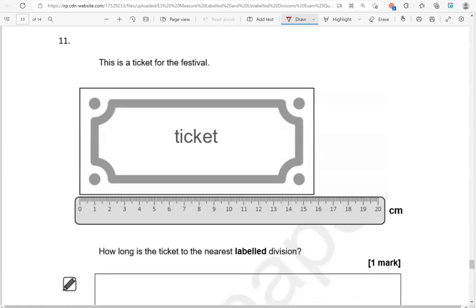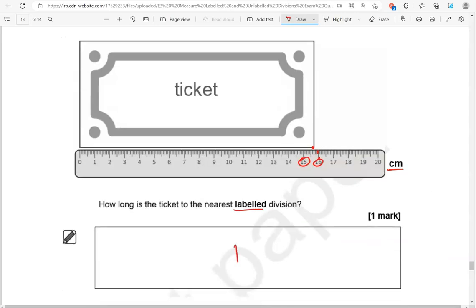This is a ticket for the festival. How long is the ticket to the nearest labeled division? It's in between 16 and 15 centimeters, and it's closer to 16 centimeters.